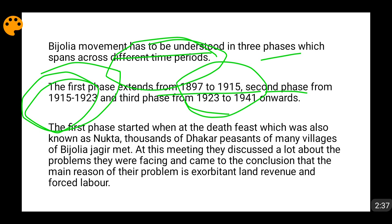Today also, death feasts exist. When somebody dies in a family, after the funeral function, some sort of feast is given to people — for the peace of the soul. At that time also, death feasts used to take place, known by the name of Nukta. At one such Nukta, thousands of Dakar peasants from many villages of the Bijouliya Jagir met with one another. When they discussed their problems, one thing came in common — all of them were suffering from excessive land revenue.